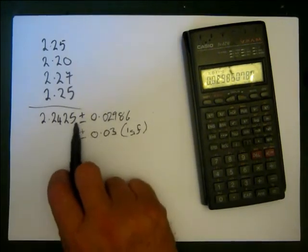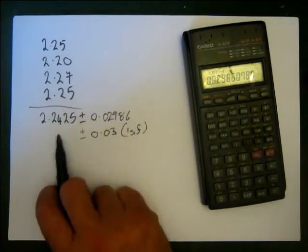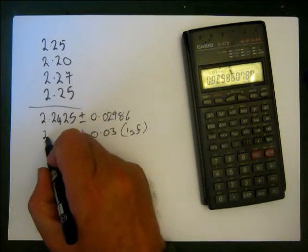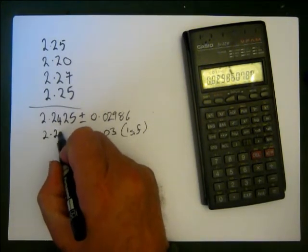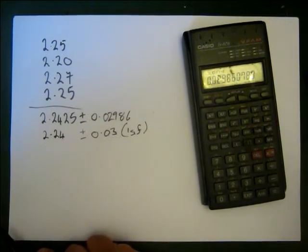So there's no point in writing this extra stuff here. This 0.25 here, because that's after that decimal point there. So in this case what we would write down is we'd write down 2.24 plus or minus 0.03.